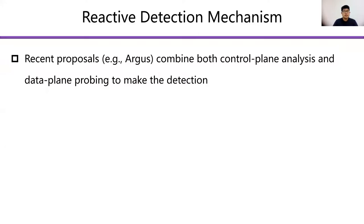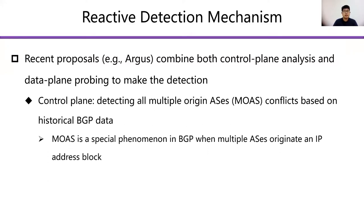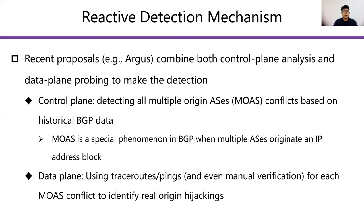Recent systems, such as AUGUS, combine both control plane analysis and data plane probing. On the control plane, they first detect all Multiple Origin AS (MOAS) conflicts based on historical BGP data. MOAS is a special phenomenon in BGP when multiple ASes originate an IP address block. Then they use traceroutes or pings for each MOAS conflict and identify origin hijackings based on data plane reachability information.